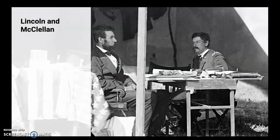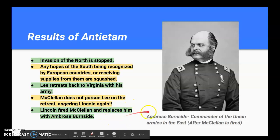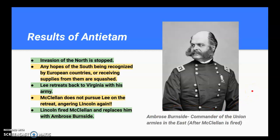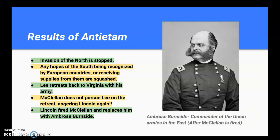Lincoln and McClellan did not have a great relationship. After the Battle of Antietam, Lincoln hoped McClellan would pursue Lee's army and finish them off. Instead, McClellan did nothing, and Lincoln was very unhappy. The results of Antietam: the invasion of the north was stopped, any hopes of the south being recognized by European countries or receiving supplies were squashed, and Lee retreated back to Virginia — but McClellan did not pursue him. Finally, Lincoln fires McClellan and replaces him with Ambrose Burnside. Interestingly, we get the word 'sideburns' from Burnside — take a look at that facial hair. As we'll find out shortly, Burnside does not have much success against Robert E. Lee either.